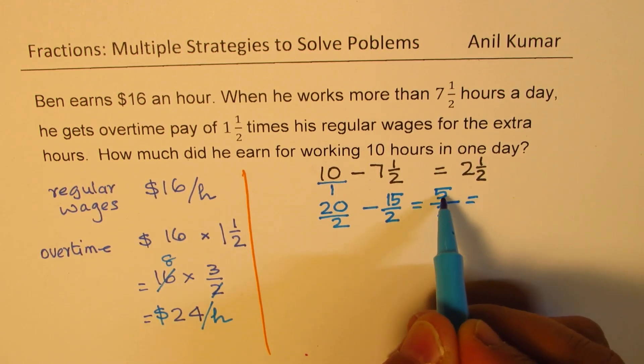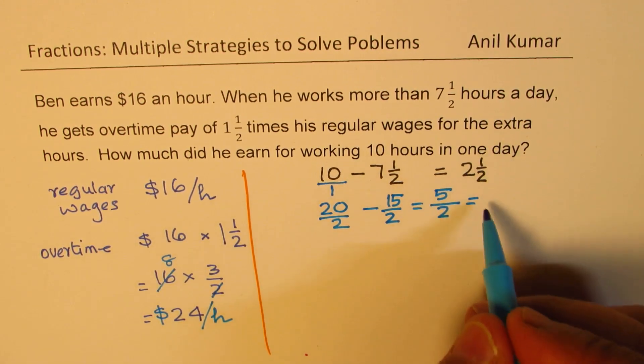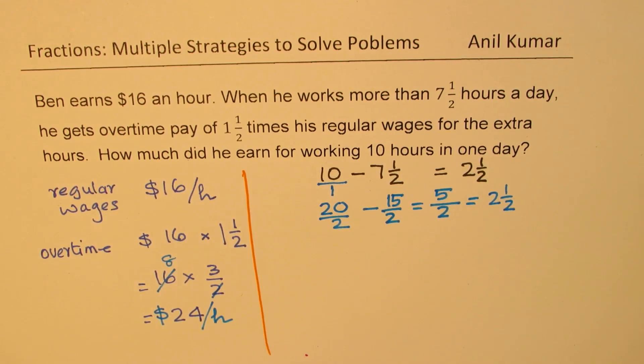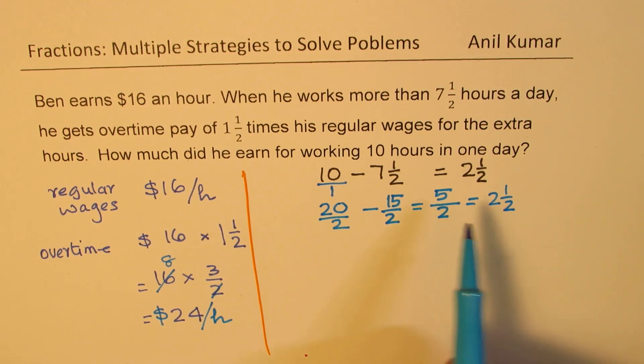And if you do 5 divided by 2, so you get 2 whole numbers and a half. Do you see that? You could get this. So that is the extra time. Normal time is 7 and a half.